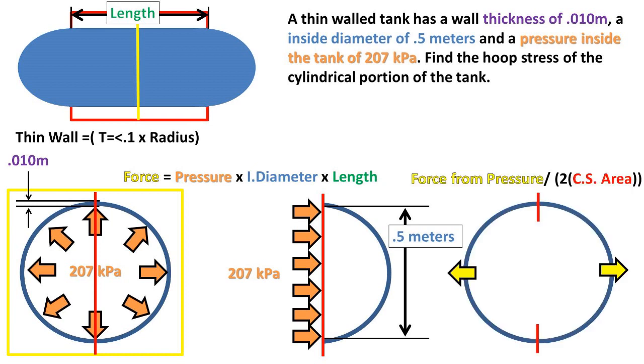Now we can take the force we found and divide by the two cross-sectional areas formed when taking a cross-section of the pressure vessel. The reason why we divide by two times the area is because we have two separate cross-sectional areas that are identical.